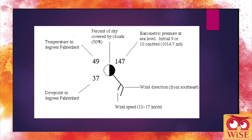This is something we look at a lot in meteorology — these are called station plots. There are lots of different symbols on them that we use to determine what is currently going on in an area. The number on the upper left indicates the temperature in degrees Fahrenheit. The number below that is the dew point in degrees Fahrenheit. The shading on the circle represents the percent of sky covered by clouds — so this one is 50%, meaning the circle is half filled in.